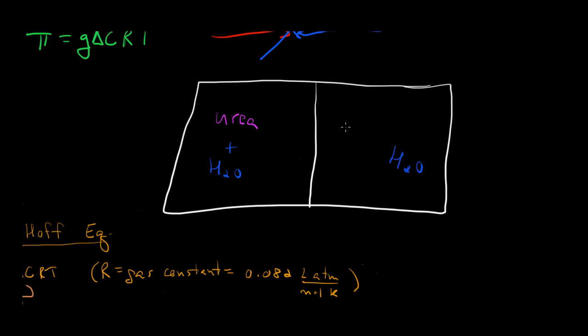Because urea freely passes through the membrane, it will permeate across and reach equilibrium. There's no osmotic pressure created. If you think about it this way, the delta C reaches zero because we have no difference in concentration across the membrane at equilibrium. So osmotic pressure equals zero in the case of urea, and no water is pulled through.